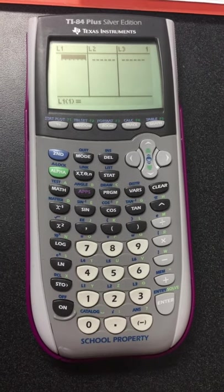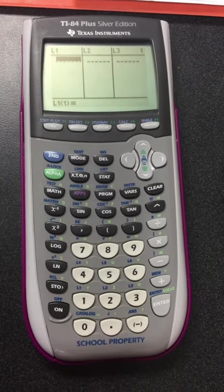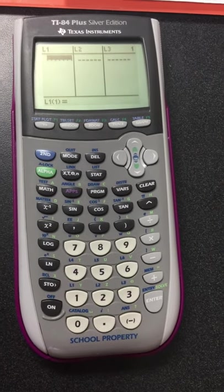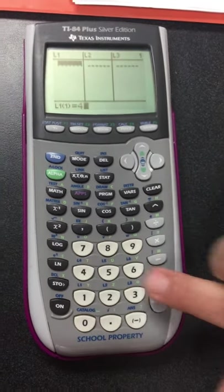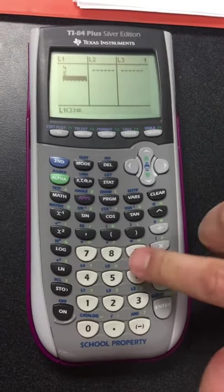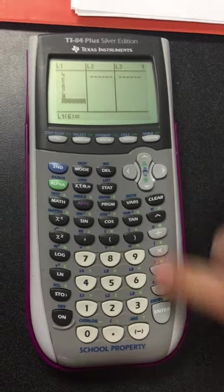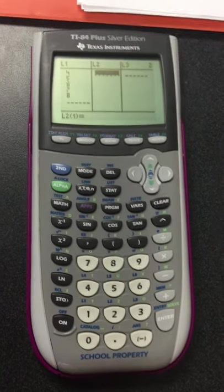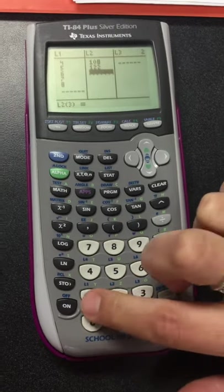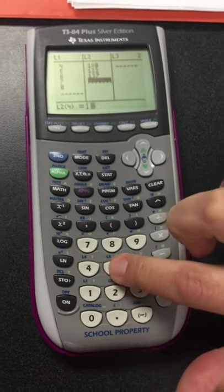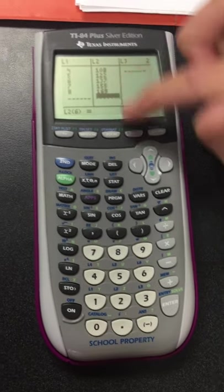And then we're going to enter the data. So it says years are 1994, 1995, and so forth. We never enter years in. We always align the data for years to the nearest, I usually do the nearest decade. So 1990 would be year 0, so 1994 would be 4, and then 5, 6, 7, and 8. And then the amount in millions is 108, 122, 137, 155, and 169. So these are our values for L2.